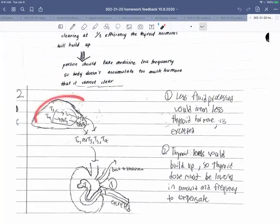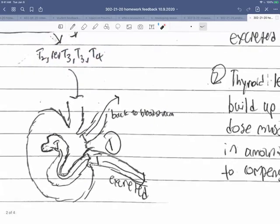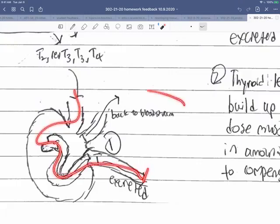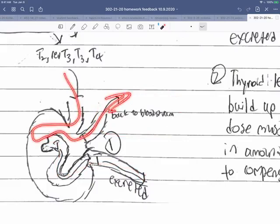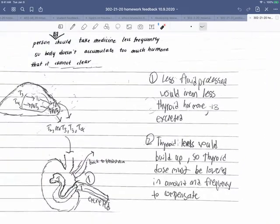Here's another version. Here is the liver, converting the T3 dose, or the T3 or T4 dose, into these alternatives. That is being excreted, but we have more coming back to the bloodstream, because the blood is coming in, but only one-third is processed. So one-third and two-thirds. That means there's less thyroid hormone excreted. Thyroid hormone levels would build up, and so the thyroid dose might be safer to be lowered.